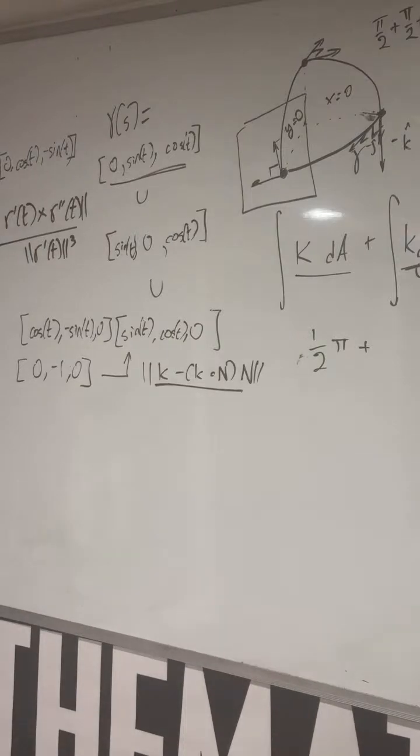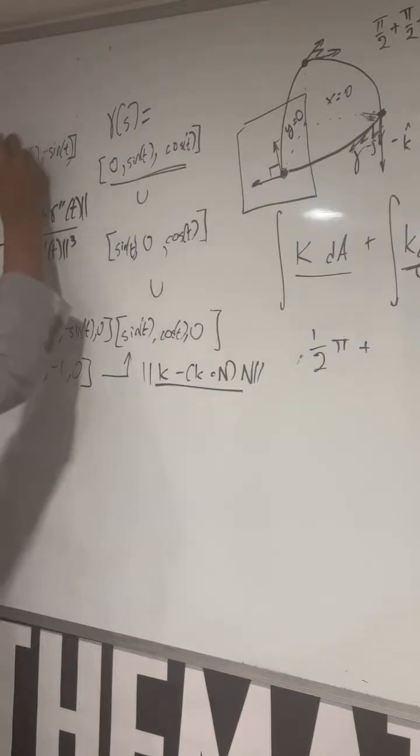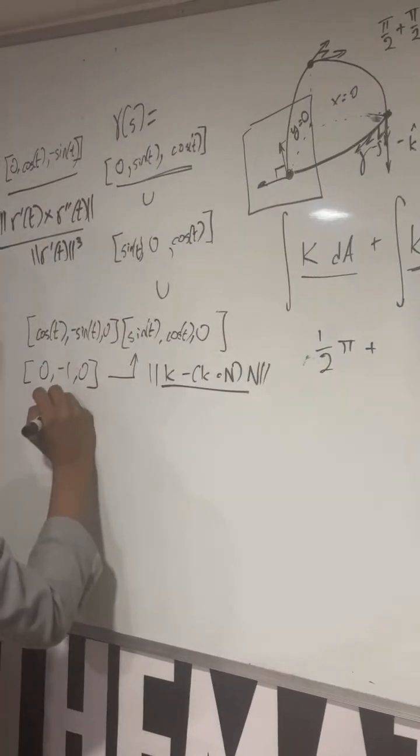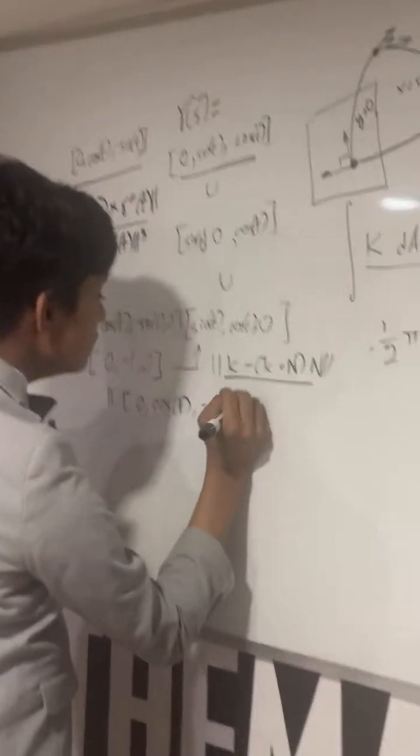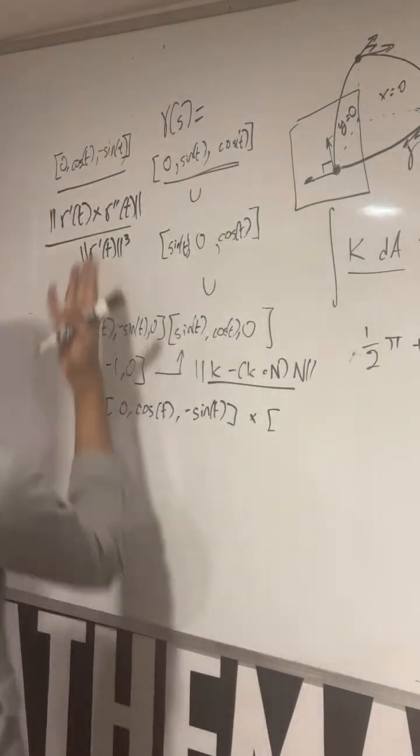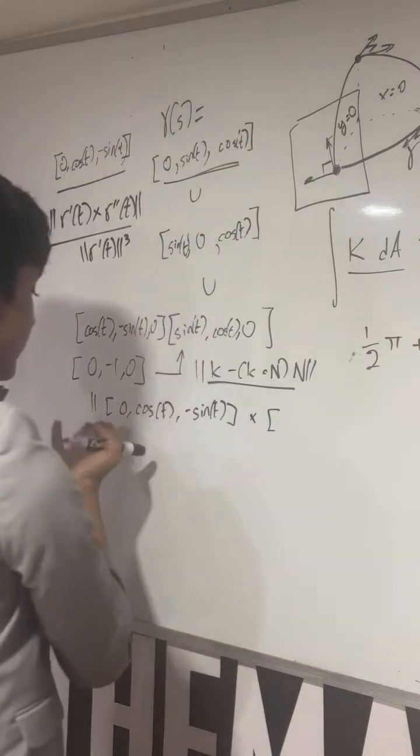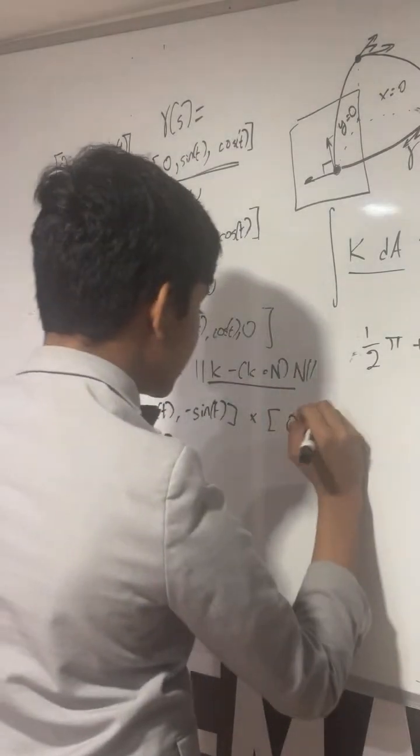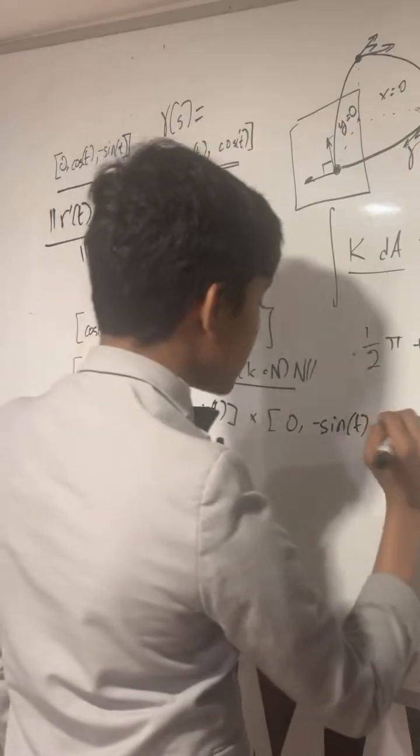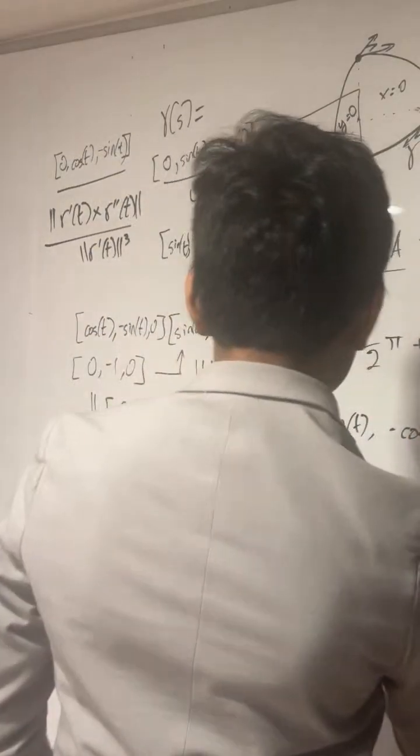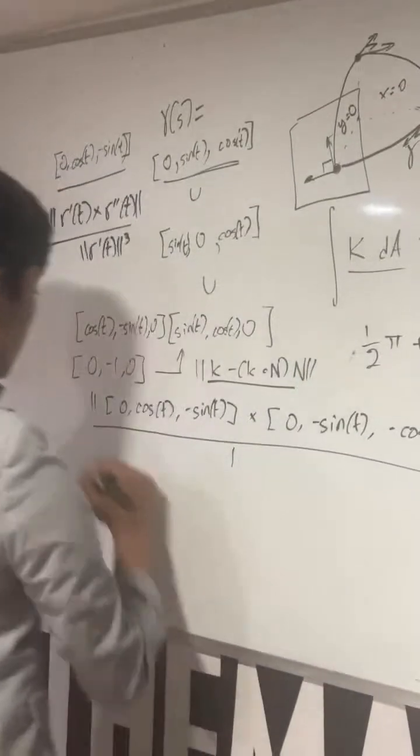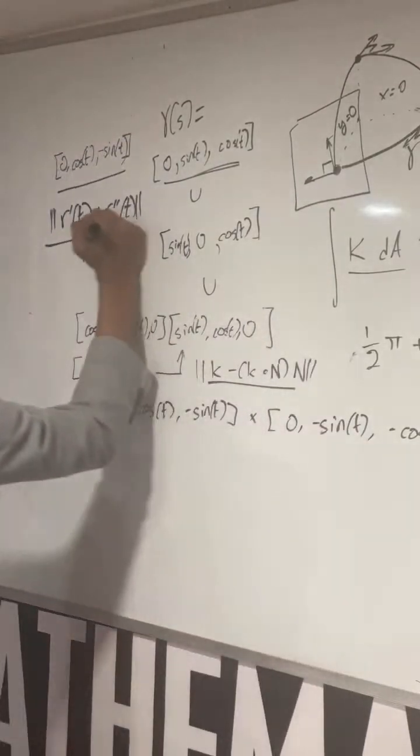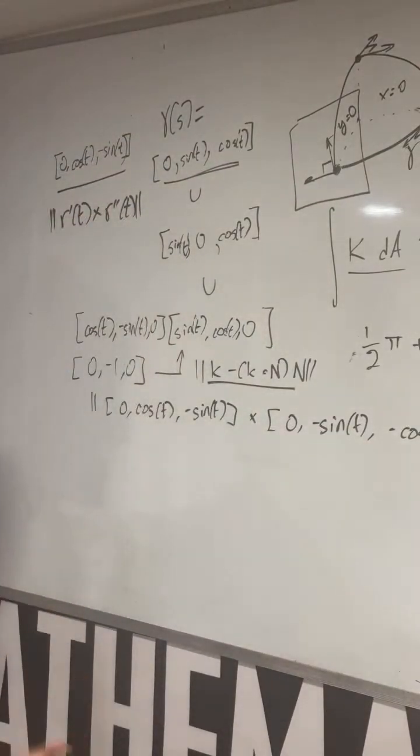So remembering this formula that definitely didn't leave my head. Now how do you calculate that? Well, in this case, you have, for example, this is r prime of t. And you have to cross that with r double prime of t, which is what? Well, you take the derivative of this again. You get 0 minus sine t minus cosine t. And you divide that by the norm of the first one cubed, which is just 1. So you will reach that. So that means the curvature is just this in all situations.